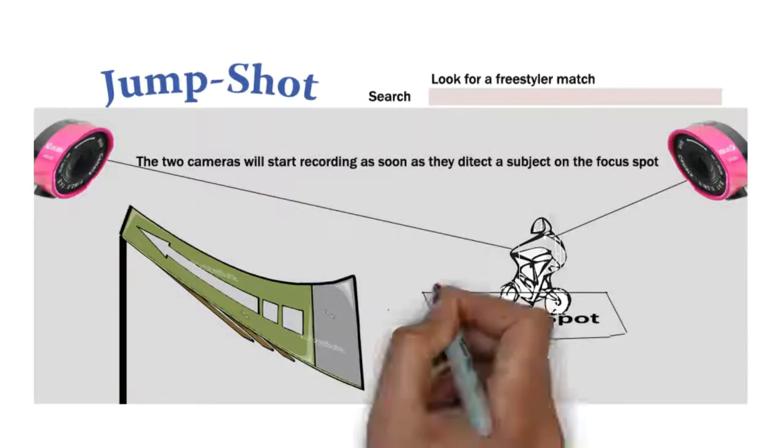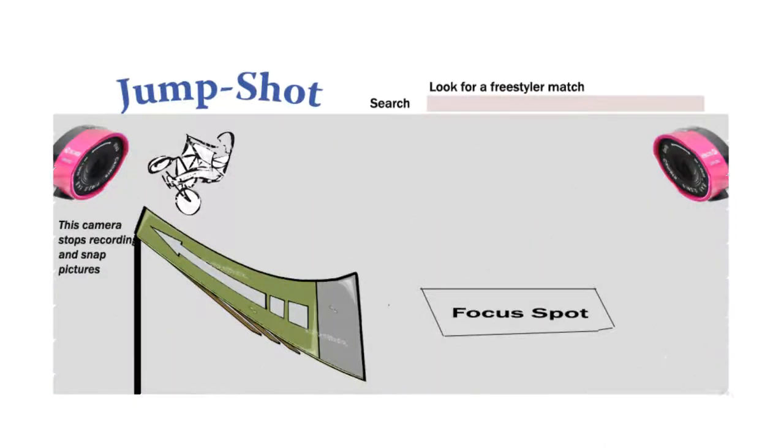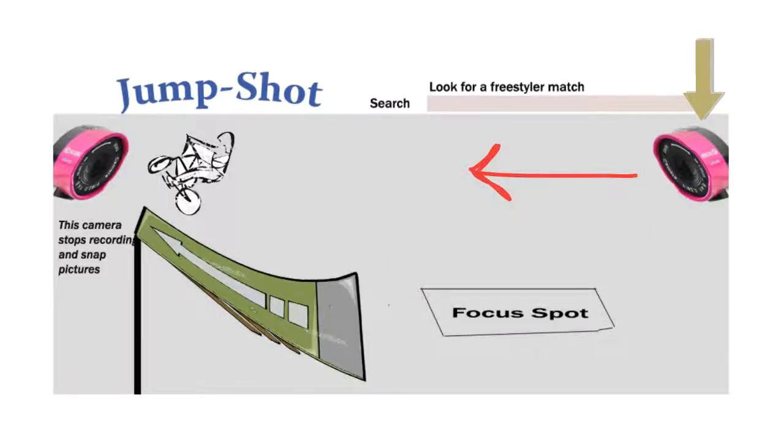When the distance sensor detects the user on the focus spot, it will trigger the cameras to start recording. When distance sensor A notices the user leaving the focus spot, it will trigger the back-end camera to start zooming in on the user. When distance sensor B detects the user coming towards the action camera, it will start zooming out whilst recording the speed of the movement.